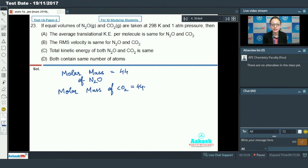If we look at first option: average translational kinetic energy per molecule. Kinetic energy depends on temperature only. So both gases have same temperature, therefore they will have same translational kinetic energy per molecule. This statement is correct. Second, the RMS velocity is same for N2O and carbon dioxide. RMS velocity is inversely proportional to their molar mass. Both gases have same molar mass, so therefore their RMS velocity will be same at same temperature.